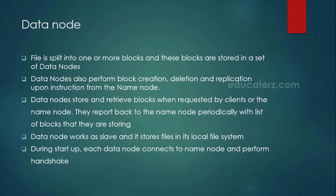Whenever a data node is storing the actual blocks, internally those blocks are again going to be stored as part of your local file system. But you cannot see those things if you directly navigate to your local file system. Rather, you must use your HDFS commands or UI to see your Hadoop distributed file system blocks.